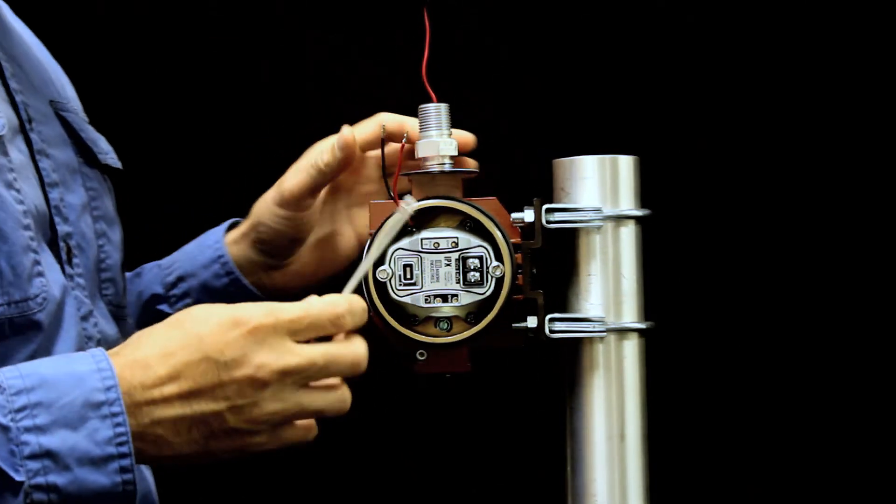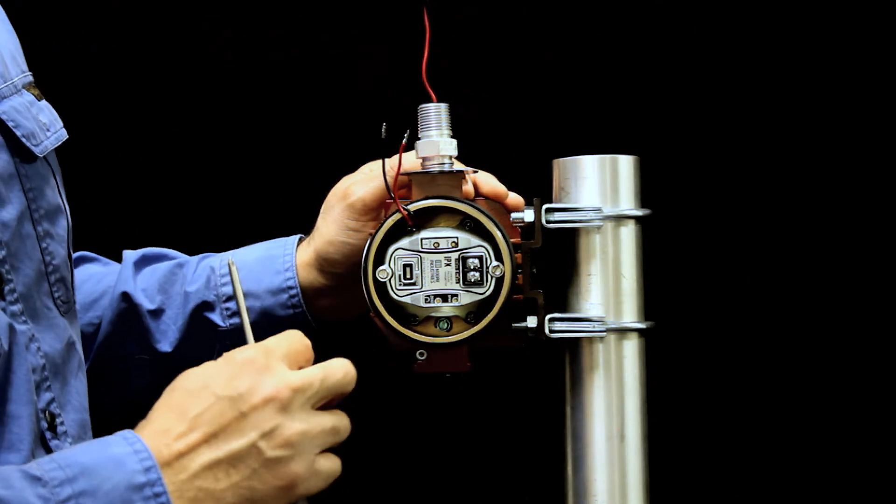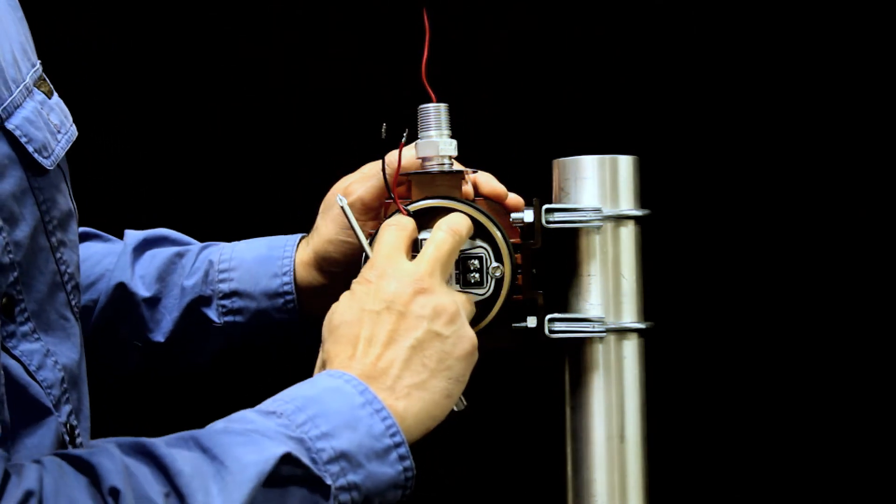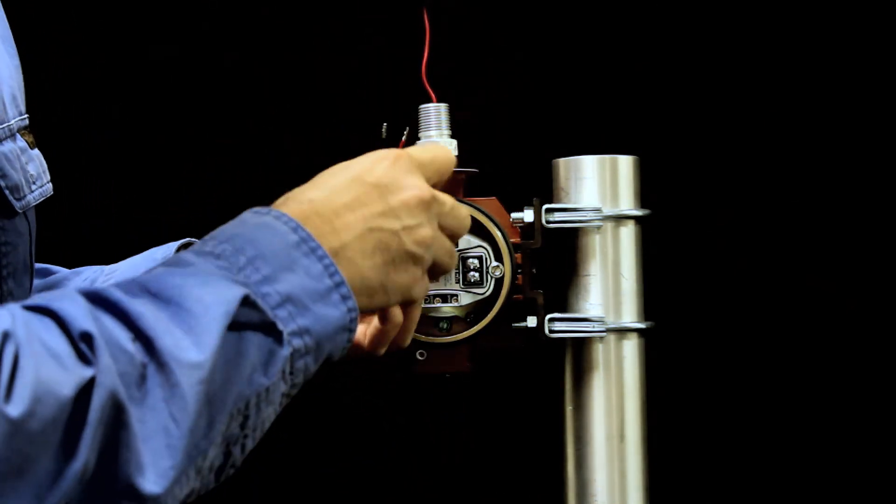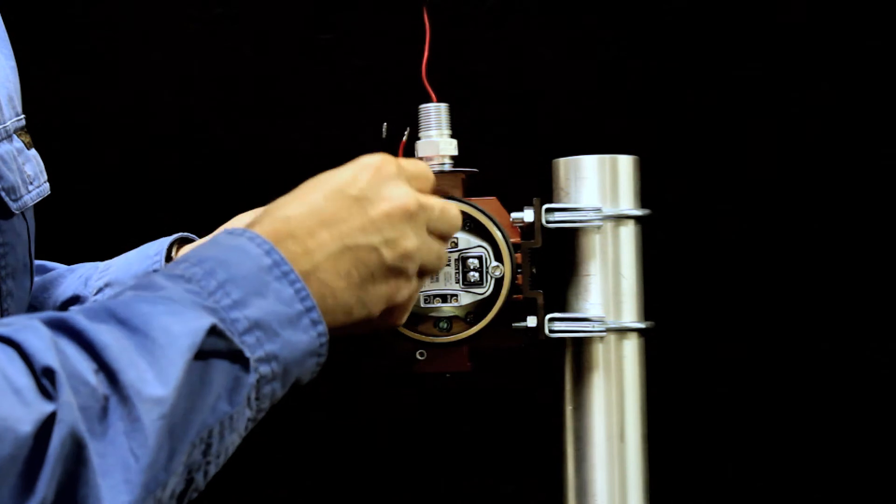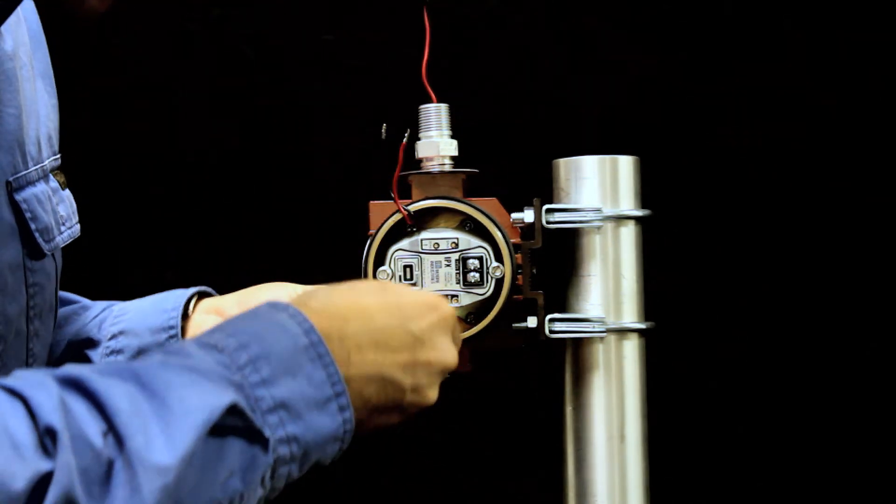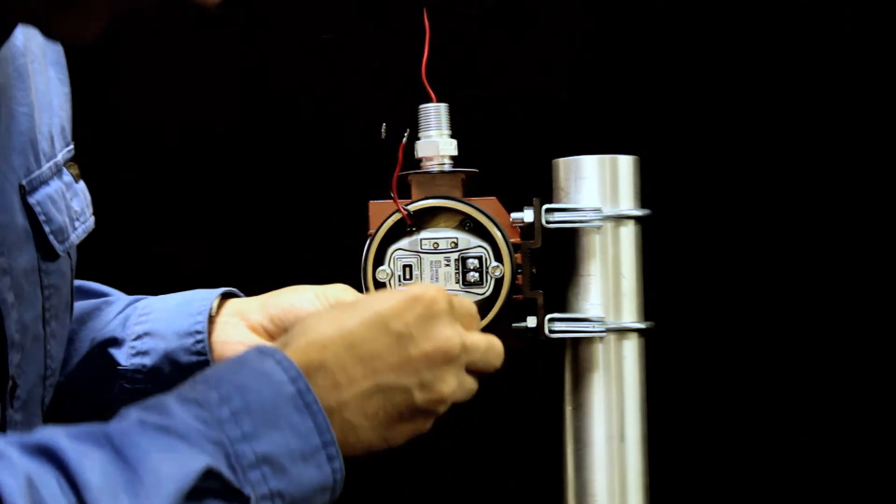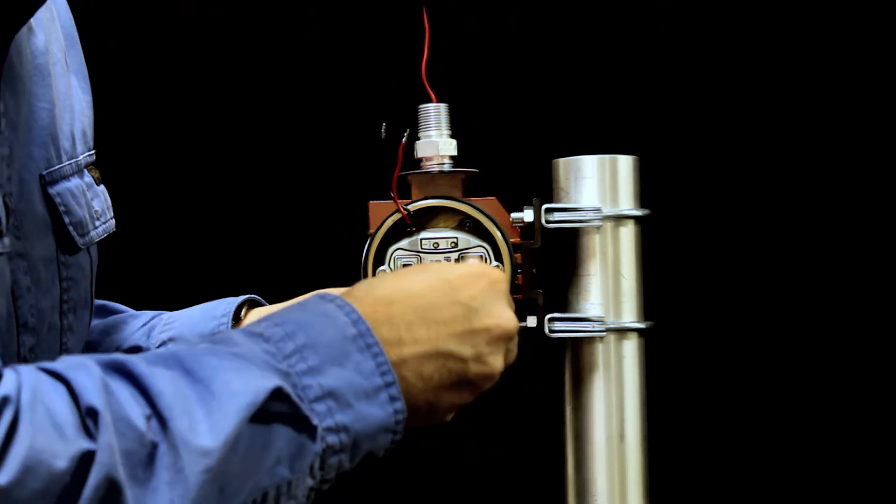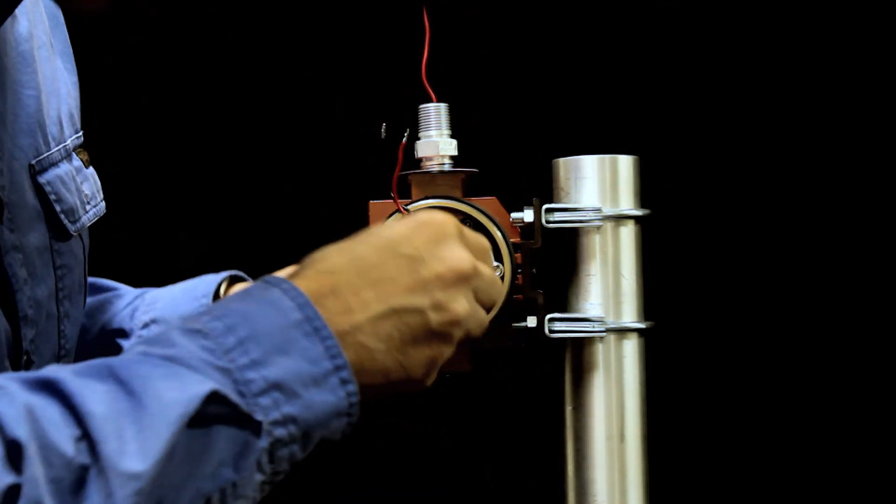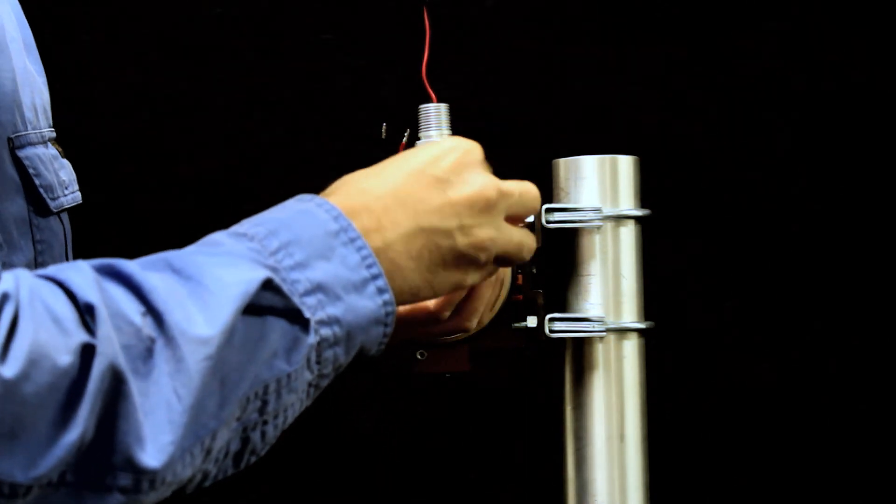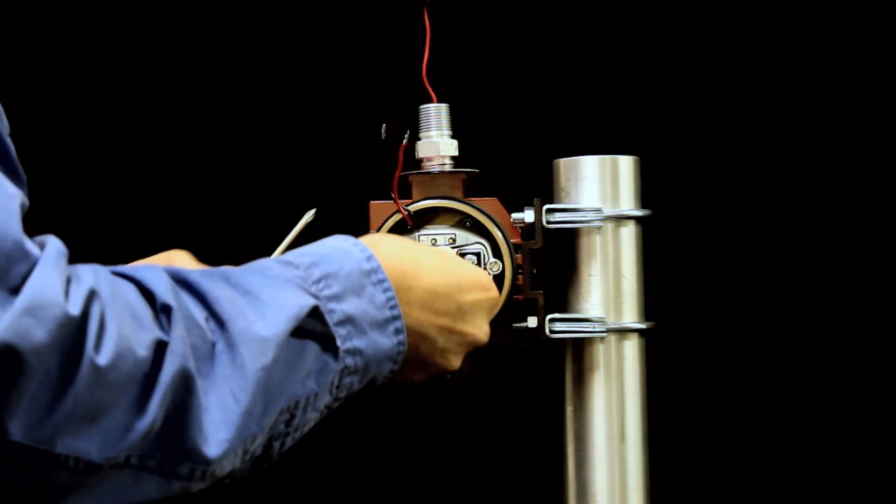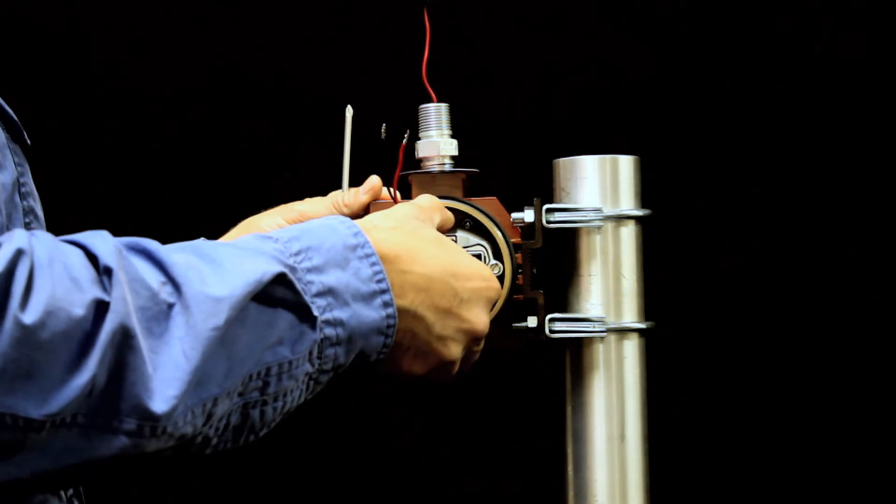Third, with the same screwdriver, locate the four mounting screws. Two on the top and two on the bottom. Loosen them. Then, carefully pull the module out of the unit.